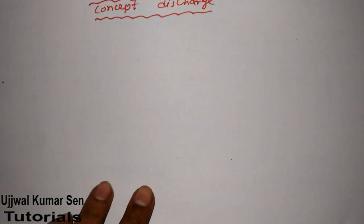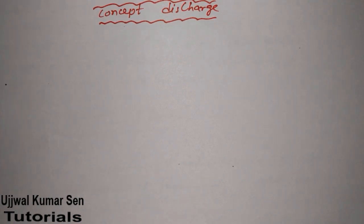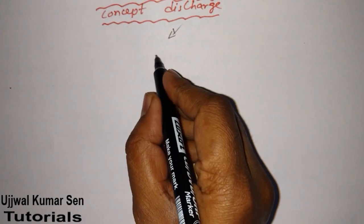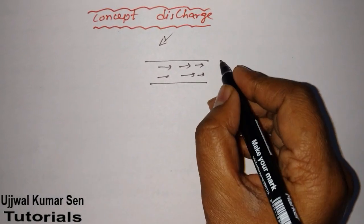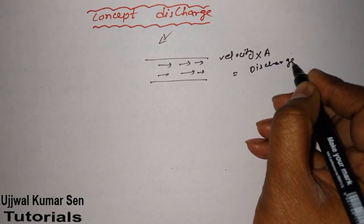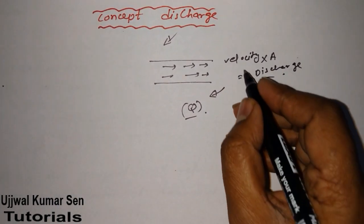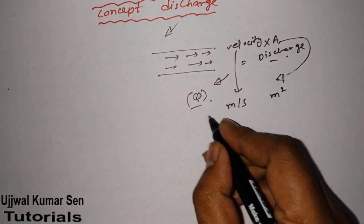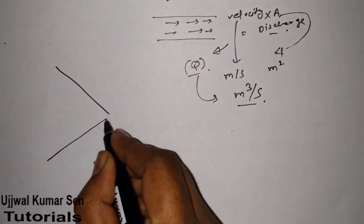This is Ujwal Kumarsen and today's topic is the concept of discharge. Suppose there is a pipe and fluid is flowing through it. The volumetric flow rate per unit cross-sectional area — actually, velocity multiplied by cross-sectional area — is known as discharge, denoted by Q. Its unit is meter per second times meter square, which gives meter cube per second.